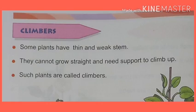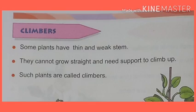Number four: Climbers. Some plants have a thin and weak stem. They cannot grow straight and need support to climb up. Such plants are called climbers. For example: money plant, beans plant, grapevine, and pea plants — all these are examples of climbers.